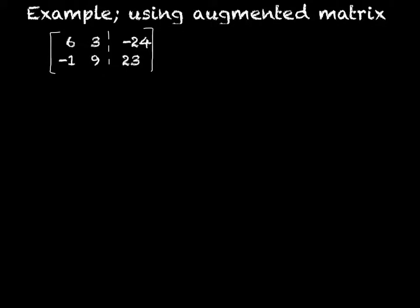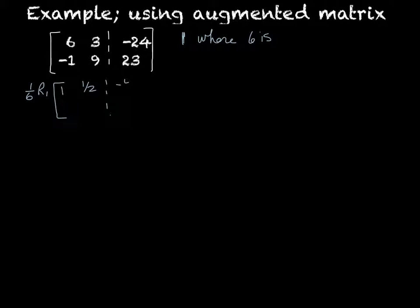Let's do another example. This one is already written as an augmented matrix. Just remember that the top row is your x and the bottom row is your y. So the first thing I need to do is get a 1 where the 6 is. I'm going to take 1/6 times row 1. So 1/6 times 6 is 1, 1/6 times 3 is 1/2, and 1/6 times negative 24 is negative 4. My next row didn't change, so it remains: negative 1, 9, 23.